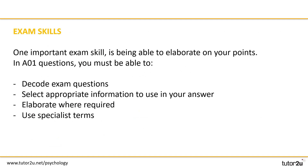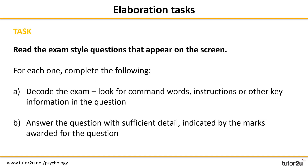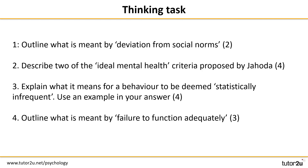Just a quick recap on exam skills. One important exam skill is to be able to elaborate on your points. In AO1 questions you must be able to decode the exam question, select appropriate material, elaborate, and use specialist terms. So we're going to put all this to the test. For this task, read the exam-style questions that appear on the screen and for each one: decode the question — look for command words, instructions, or any particulars crucial to interpreting the question accurately — and then answer the question with sufficient detail. Pause the video for 15 minutes while you give these questions some careful thought and write your answers down.